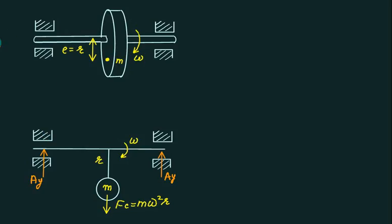If you try to draw the FBD of this one, you will get FBD like this. This one is Ay, this one is By. So this one is Ay and this one is By. And the centrifugal force will act downward. Now if the centrifugal force will act downward, the magnitude of centrifugal force is Fc.